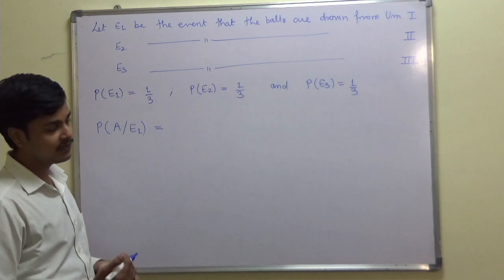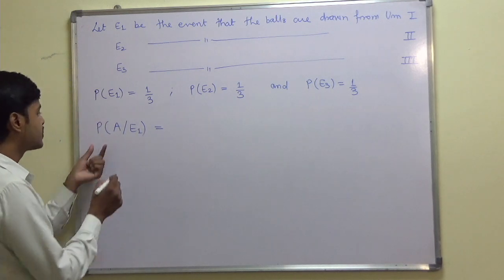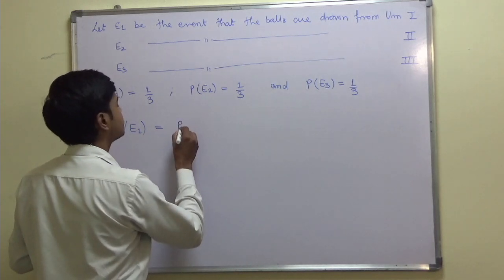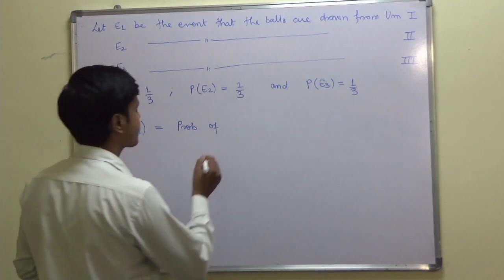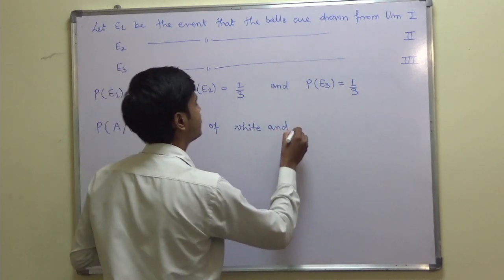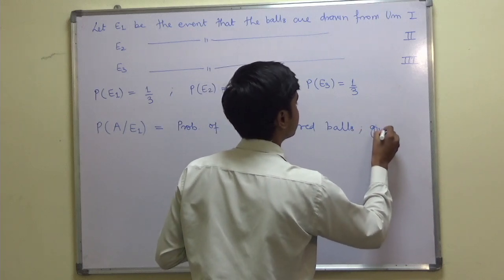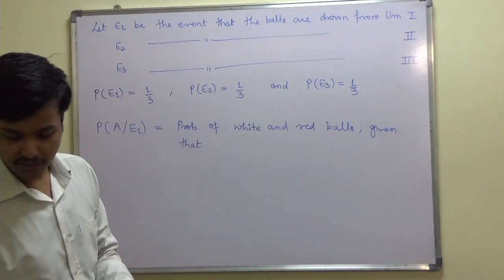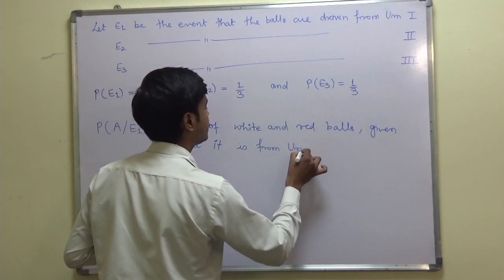Probability of A given E1 means the probability of drawing white and red balls given that the urn is urn 1. So from urn 1, we have 2 white, 2 black, and 3 red balls.